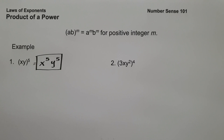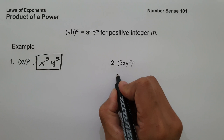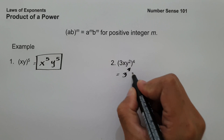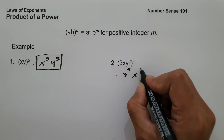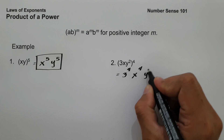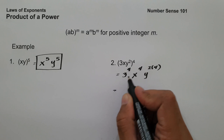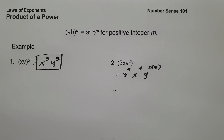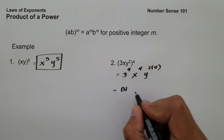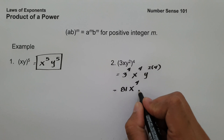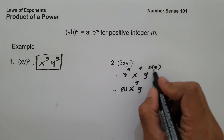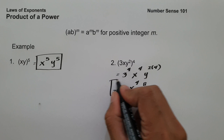On example number two, we have quantity 3x, y squared, raised to 4. To simplify, let us distribute the exponent. This will be 3 raised to 4, times x raised to 4, times y squared raised to 4. 3 raised to 4 is 81, since you multiply 3 four times to itself. Then we have x raised to 4, and for y: 2 times 4 is 8, so y raised to 8. And this will be our answer.